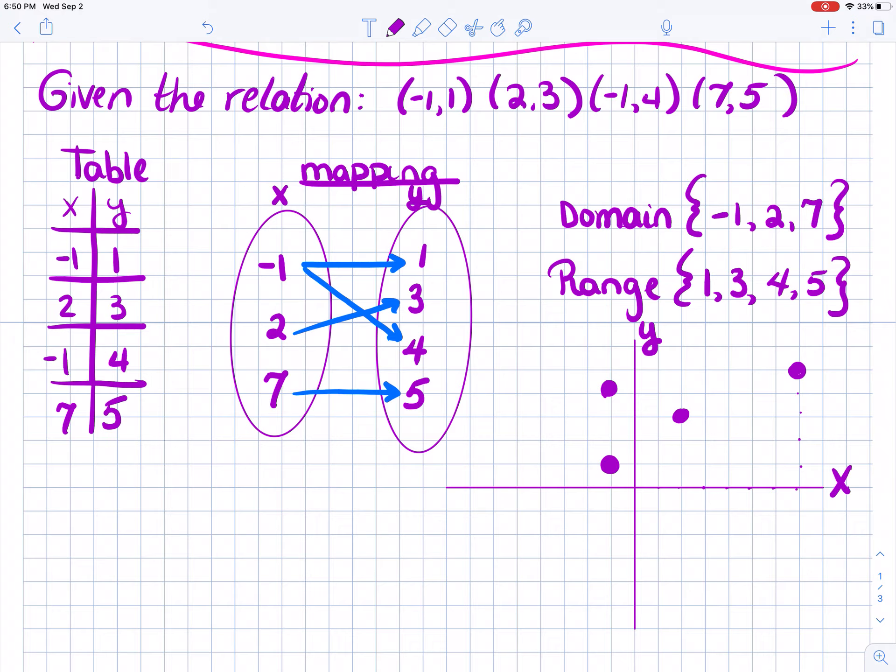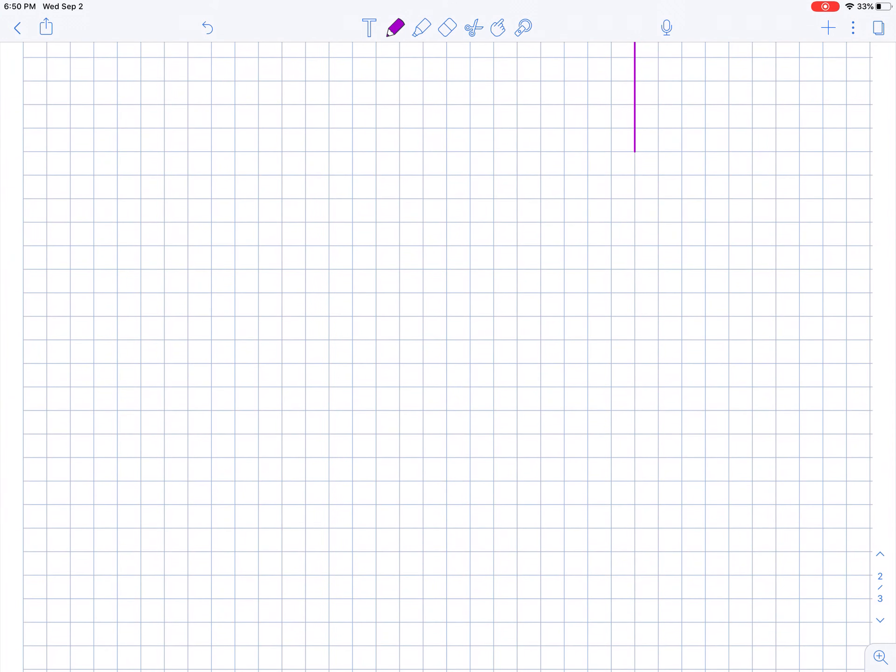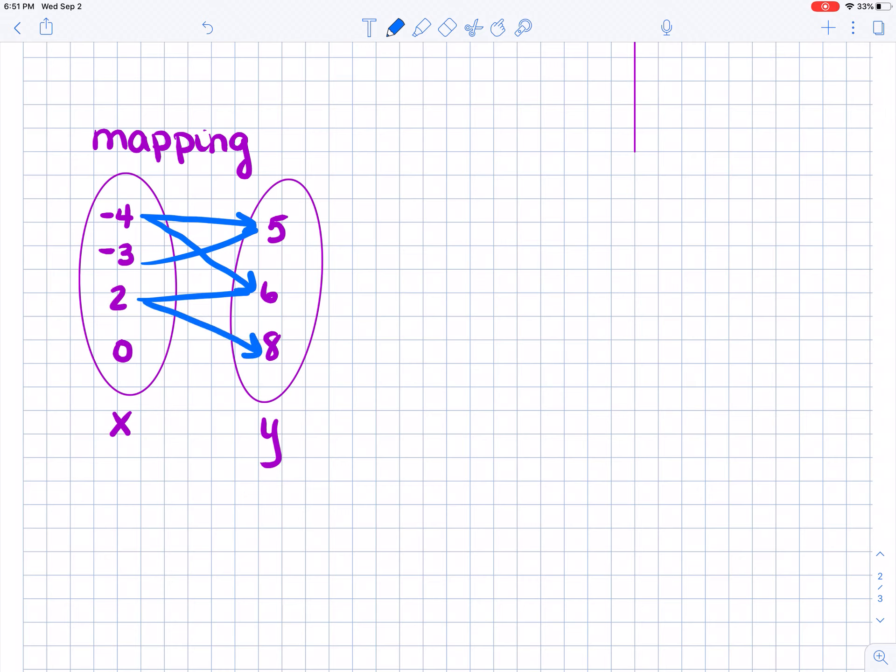Let's do one more example. What if I gave you a mapping to start? I could do that. Here's the mapping. I put negative 4, negative 3, 2, and 0 in the input, my X values, and 5, 6, and 8 in my outputs. Now if I don't have arrows, then I don't have a mapping because then I don't know which one goes with which. So negative 4 goes with 5, but negative 4 also goes with 6. 3 is going to go with 5. 2 is going to go with 6 and 8. And 0 is going to go to 8.